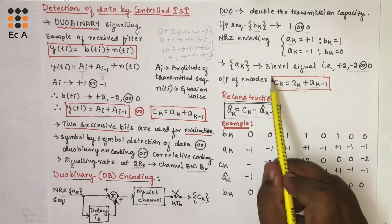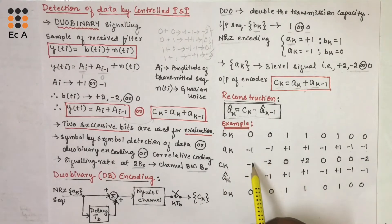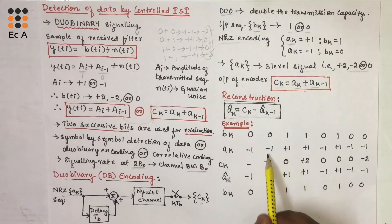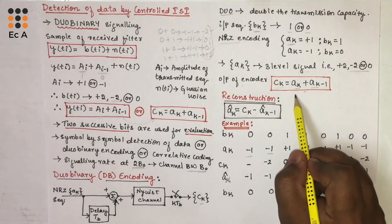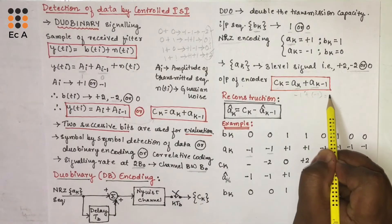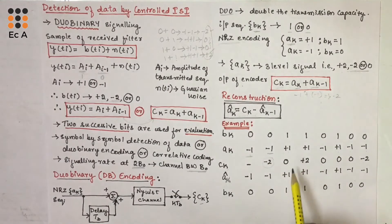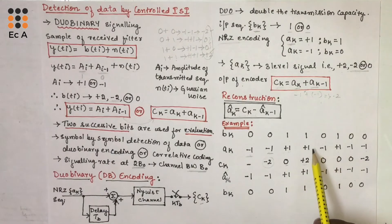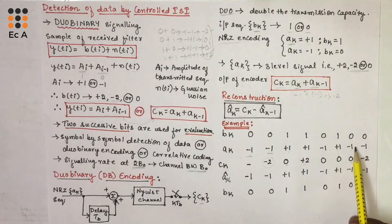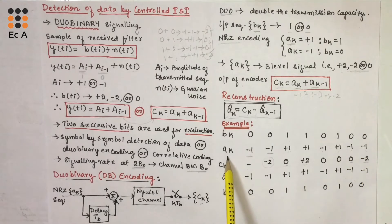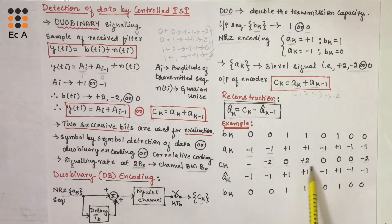We need to add the present and previous bits to compute CK. For the first bit, we do not know the previous value, so it is marked as dash. For subsequent bits: (-1)+(-1) = -2; (+1)+(-1) = 0; (+1)+(+1) = +2; (-1)+(+1) = 0; (+1)+(-1) = 0; (-1)+(-1) = -2; (-1)+(-1) = -2. So AK is represented as three-level signal CK with values -2, 0, +2.